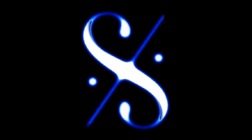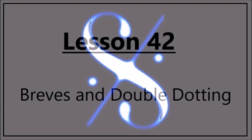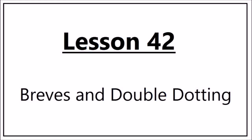Music Theory, a complete course from grades 1 to 5. Lesson 42: Breves and Double Dotting.